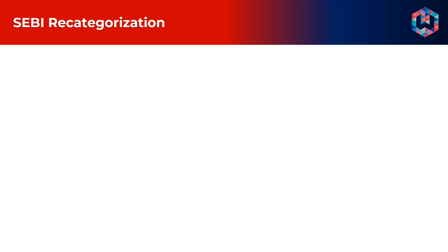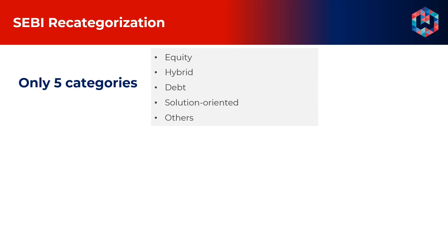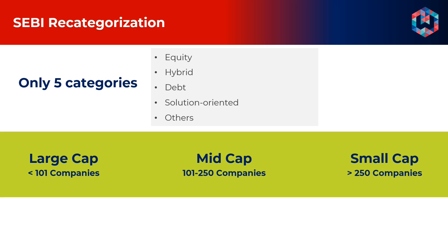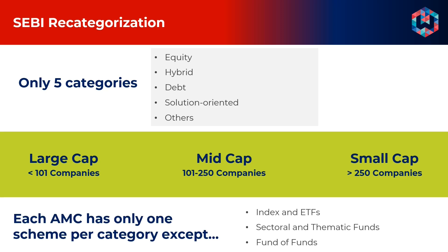In 2018, SEBI recategorized mutual funds into five broad categories: equity, hybrid, debt, solution-oriented, and other schemes. It also redefined market capitalization of stocks, stating that the first hundred stocks by market capitalization would be classified as large cap, the next 150 as mid cap, and the remaining would be small cap stocks. SEBI also insisted that each AMC have only one scheme in each category, except in the case of index funds, ETFs, sectoral and thematic funds, and fund of fund schemes.